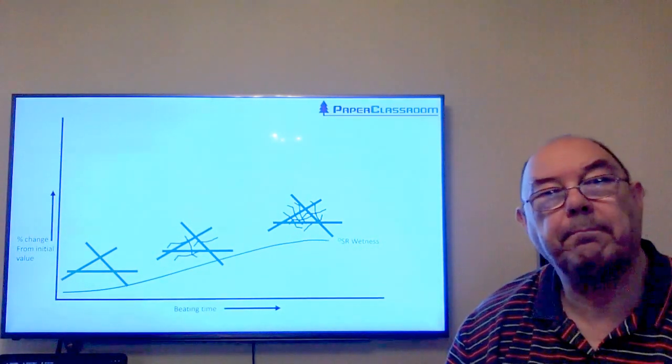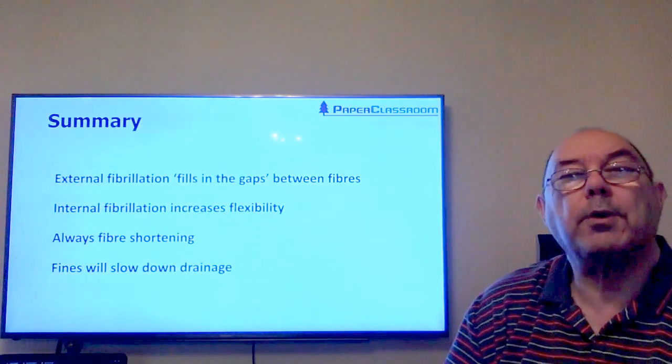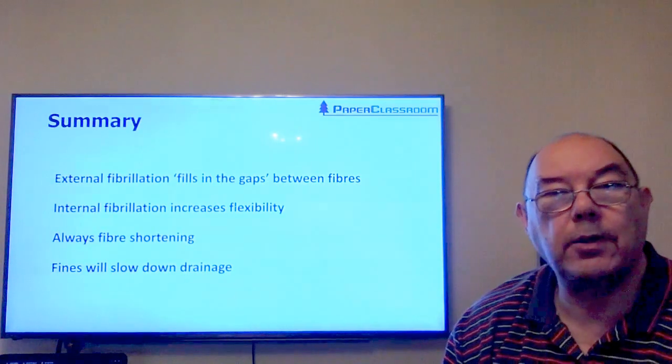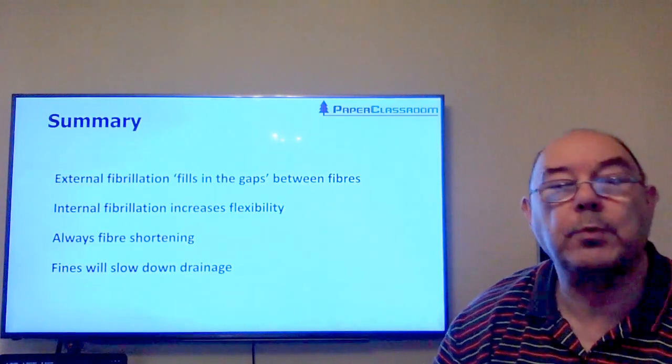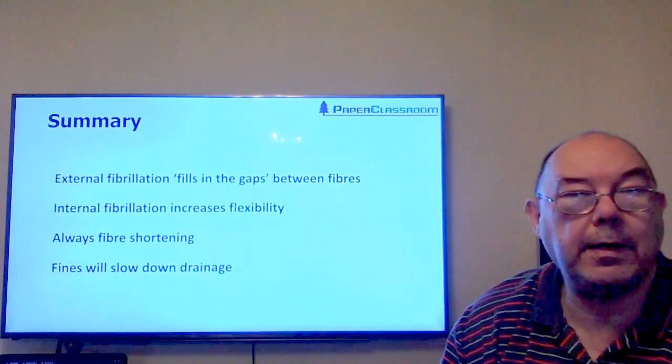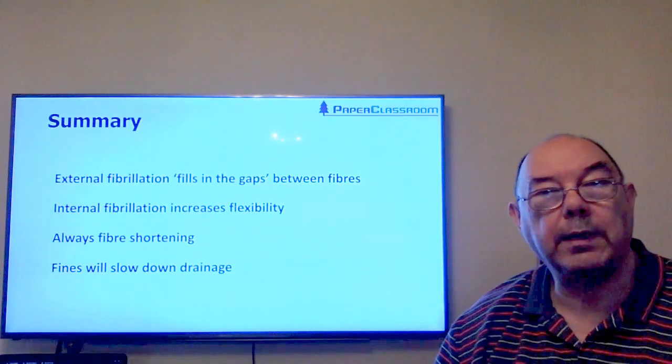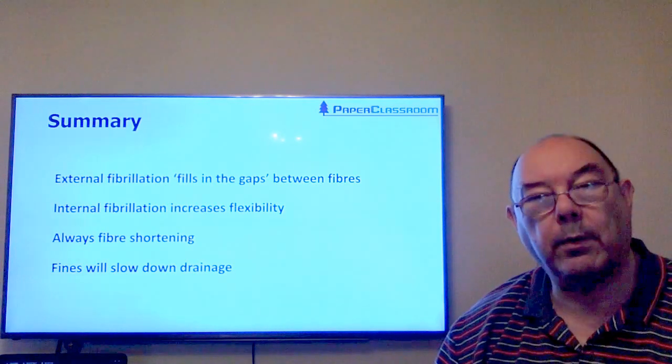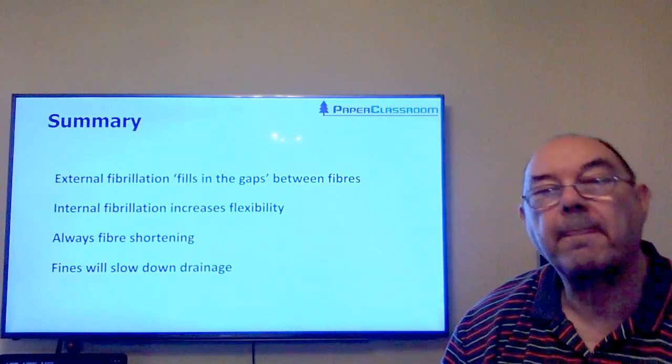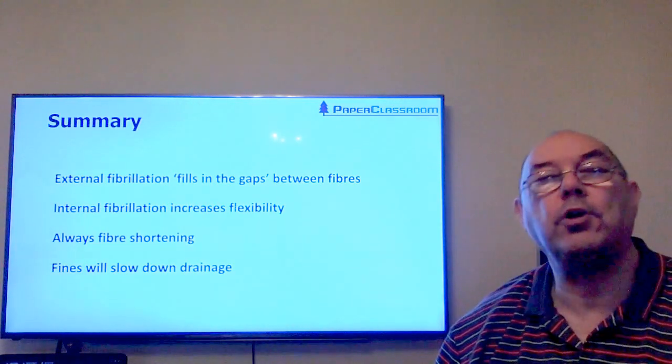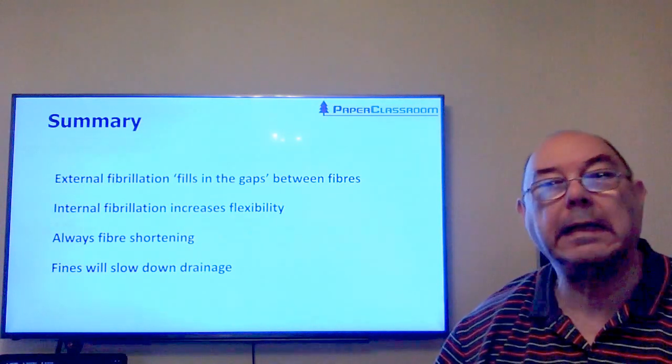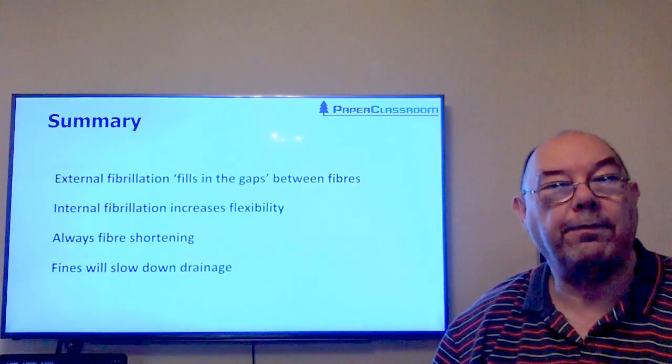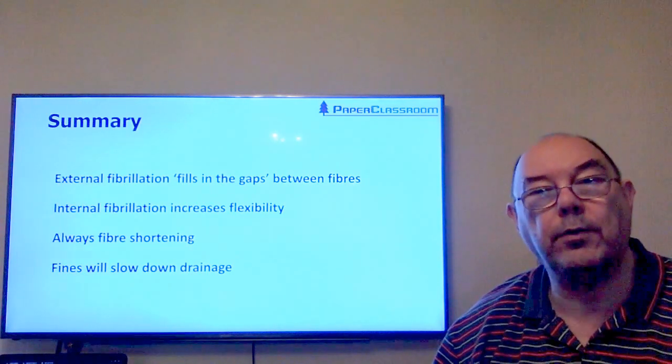A quick summary: External fibrillation fills in the gaps between fibers, slowing down drainage. Internal fibrillation increases fiber flexibility, which reduces hole size and also affects drainage. We always get fiber shortening going on, no matter how little we want it, and the fiber shortening produces fines which also slow down drainage.